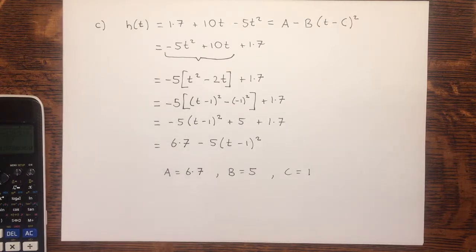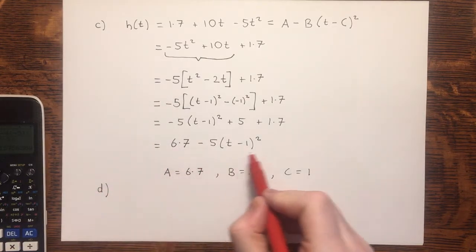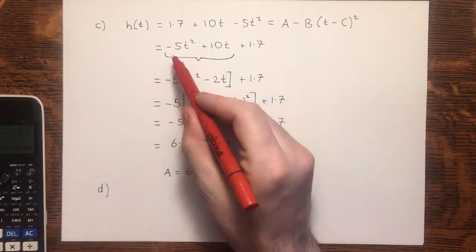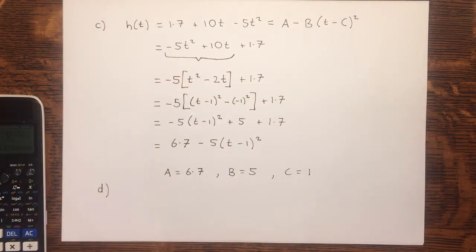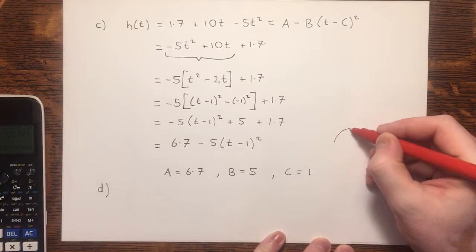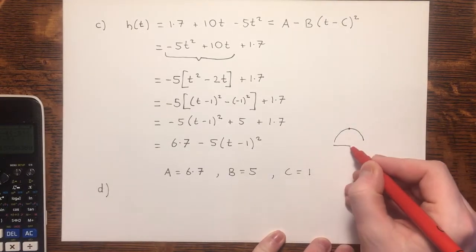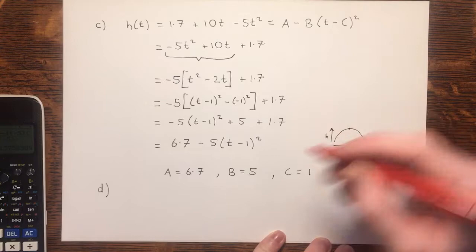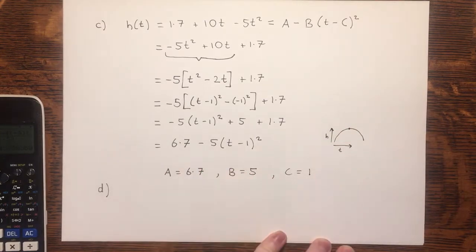Part D says, using your answer to part C, or otherwise, find the maximum height of the shot put, and the time at which this maximum height is reached. Here's our height. The completed square form is useful for finding the coordinates of maximum and minimum points. In this case, because this is a negative quadratic, we'll have a maximum. It would look like this, and we're trying to find the height point. Along the way, that coordinate would tell us the time, and this would tell us the height. So, how can we get this from the equation that we found?